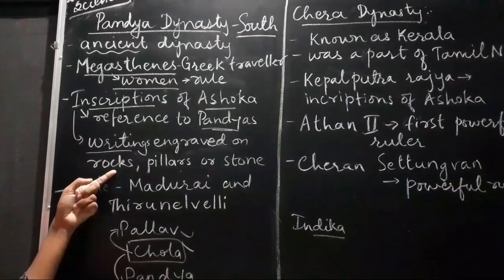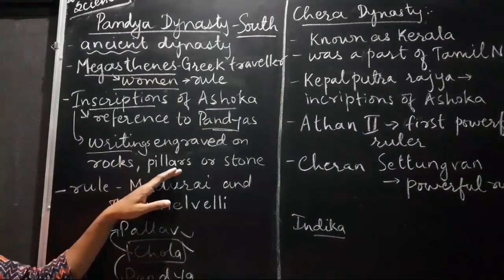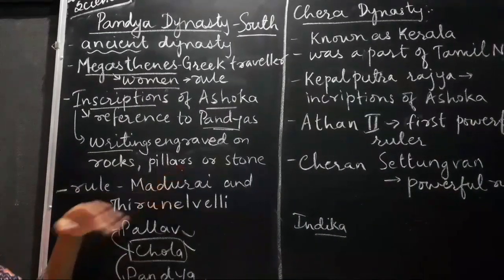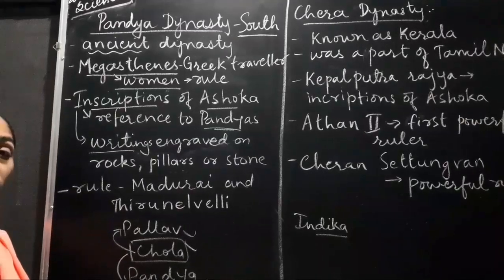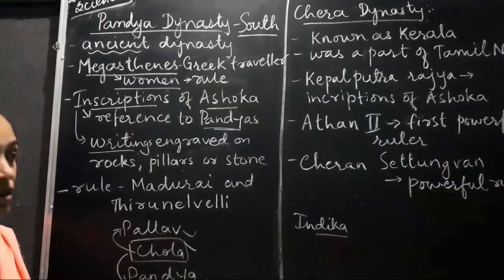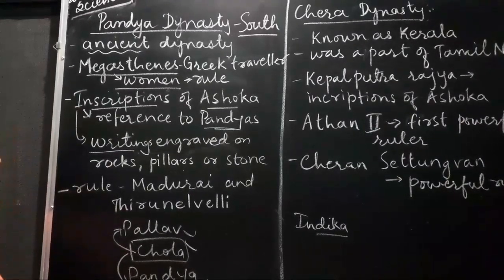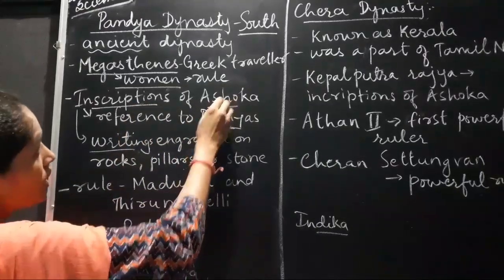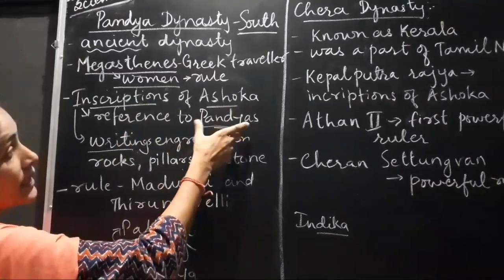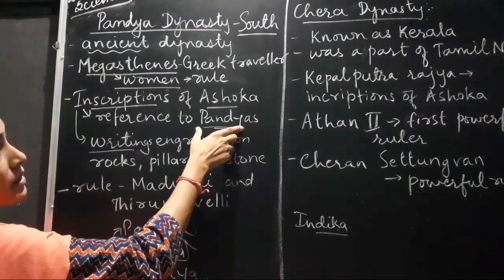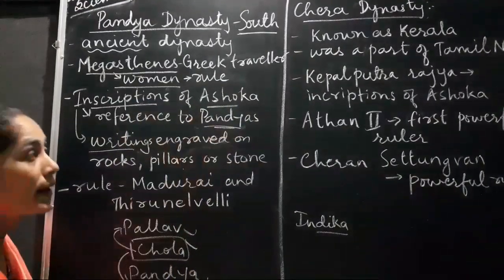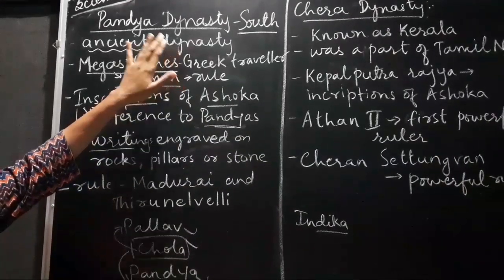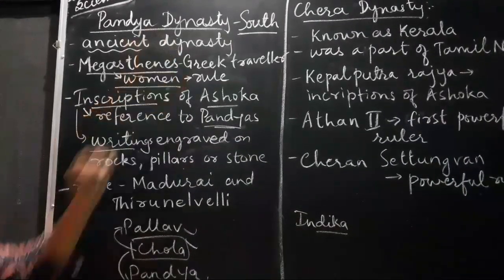This is all inscribed on rocks, pillars and stone so that it remains for ages and the next generation comes to know about it. The inscription of Ashoka contains the details of the Pandya dynasty, so it is quite ancient and a very well known dynasty.